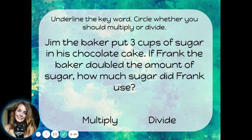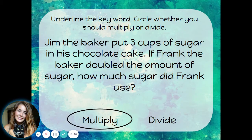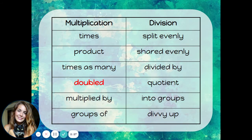Jim the baker put 3 cups of sugar in his chocolate cake. If Frank the baker doubled the amount of sugar, how much sugar did Frank use? If you're doubling something, you are multiplying it by 2. Doubled is a multiplication word.